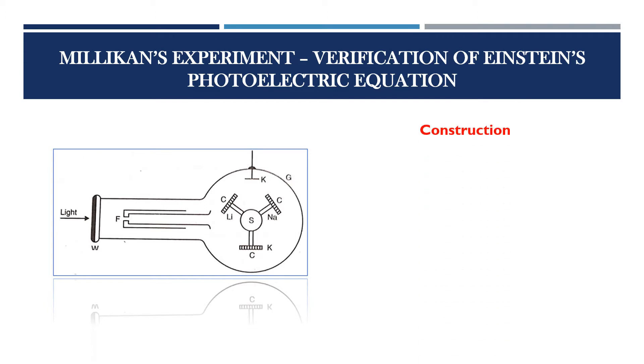We may split up into three parts for explaining this experiment. First one, construction. Alkali metals, sodium, lithium, and potassium are employed as emitters. Since they exhibit photoelectric emission, even with visible light.